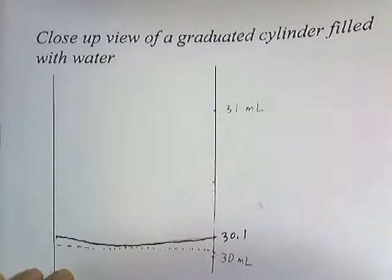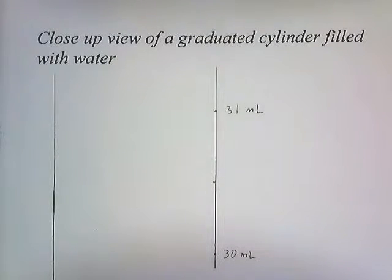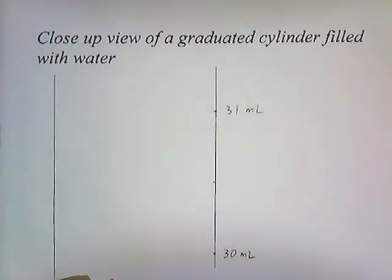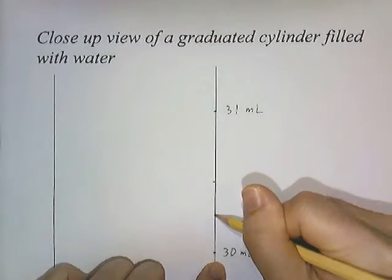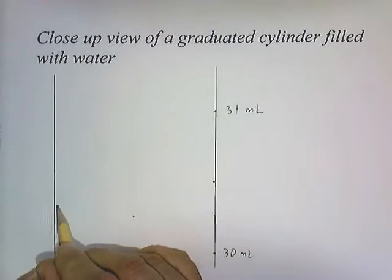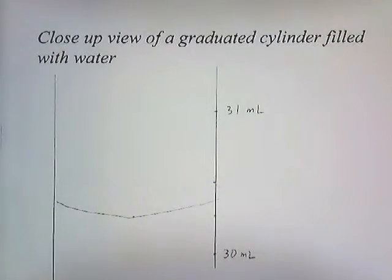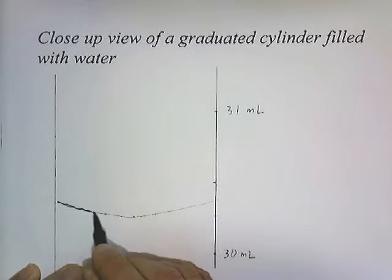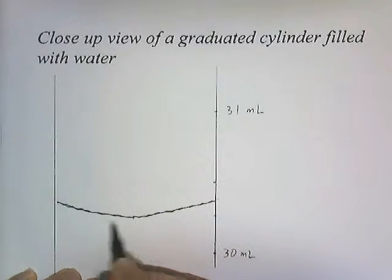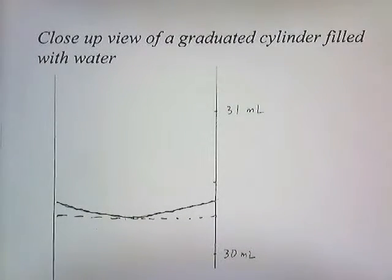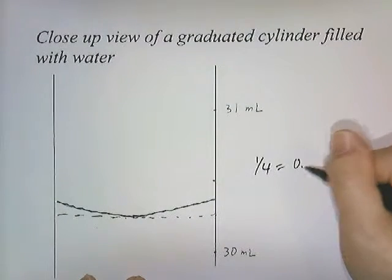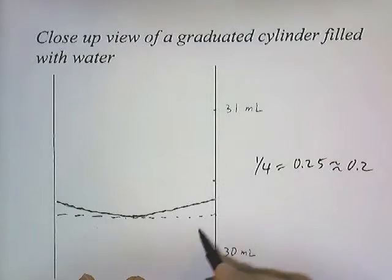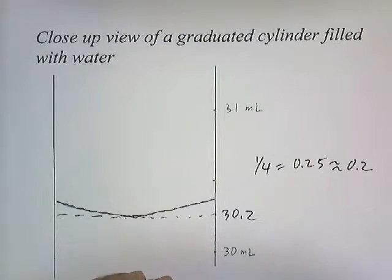Let's go through another example. Suppose the water line falls a quarter of the way in between. We're pretty good at estimating one half, and half of a half is one quarter, so estimating one quarter is not that difficult. So this is halfway in between, and then halfway between the half is a quarter. If the bottom of the meniscus is a quarter of the way over, one-fourth is the same as .25, so we can round that to .2. We'll call this 30.2.